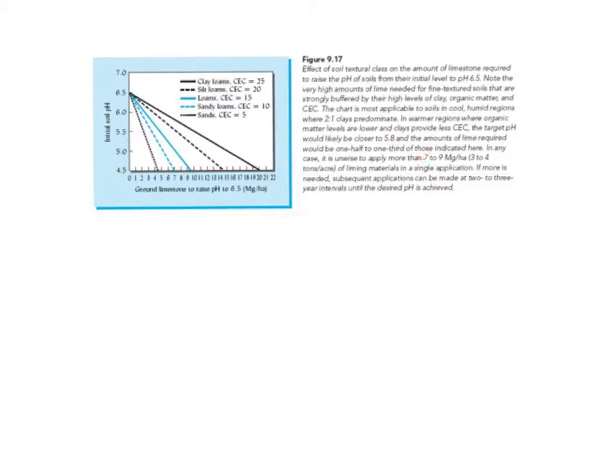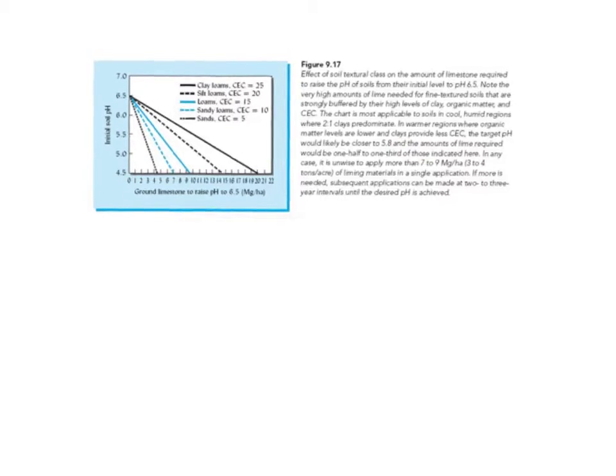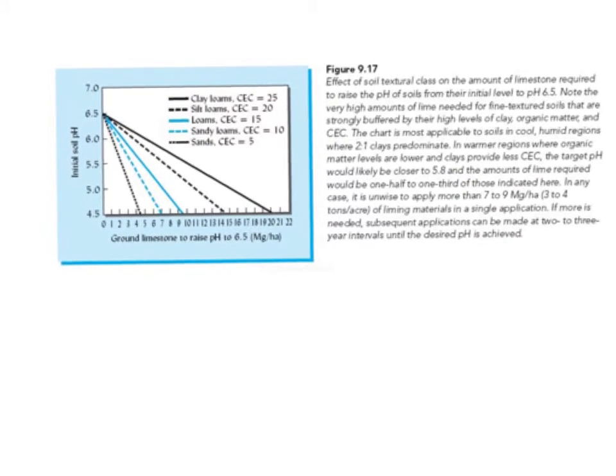So in Figure 9.17, what we're looking at is our five different soil textures. You can see we go from clay loam, silt to silt loam, to loam, sandy loam, and then sands.